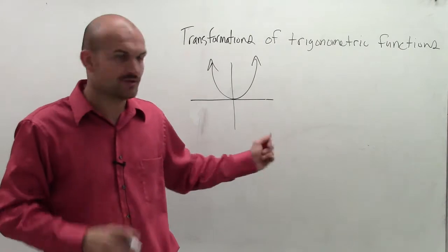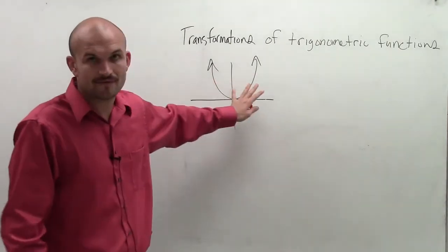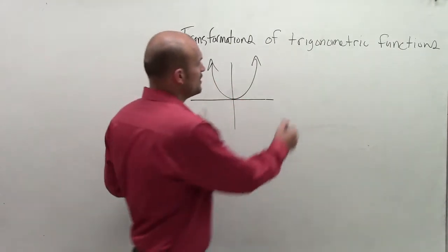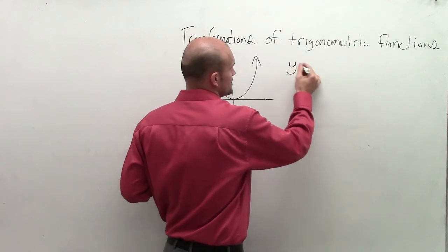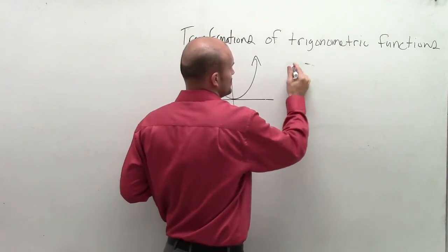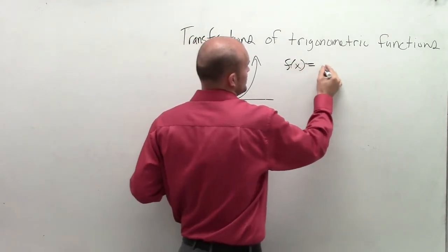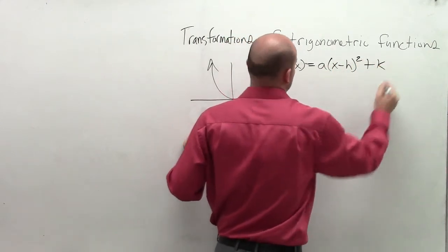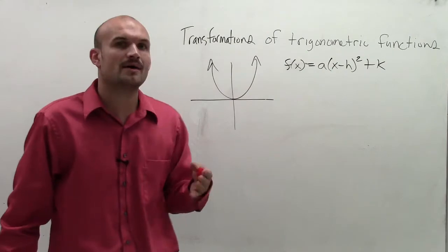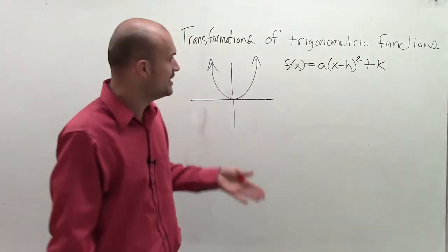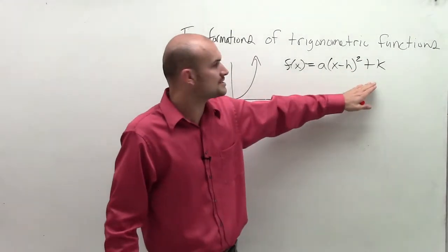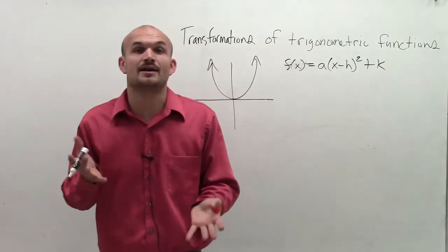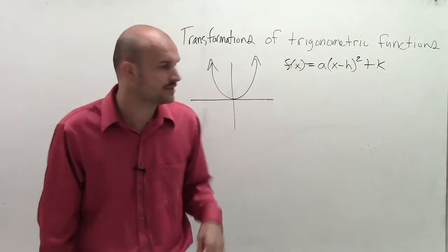If I have a parabola graph from a quadratic equation, remember we wrote our vertex form. We would sometimes write, and I'll write it as a function, f(x) equals a times (x minus h) squared plus k. The reason we decided to write it in vertex form is because each one of my letters had a certain element on how it affected the graph.